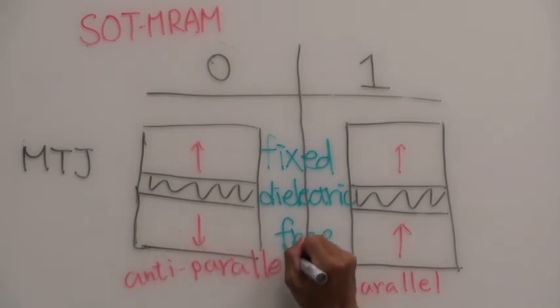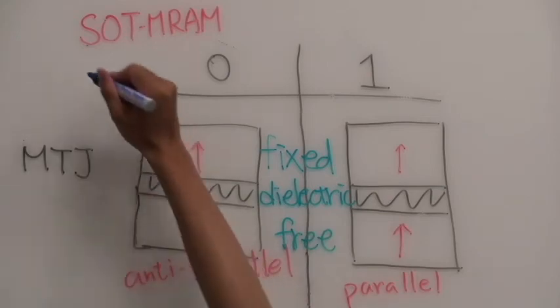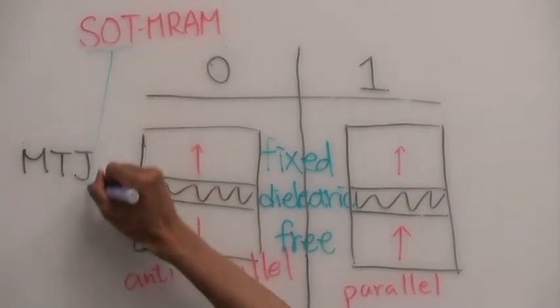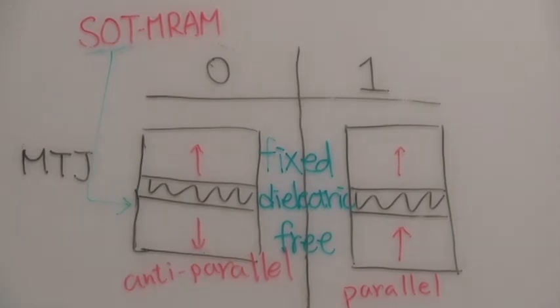These are two states of MTJ. The spin-orbit torque is one of the methods to change magnetization of the free layer.